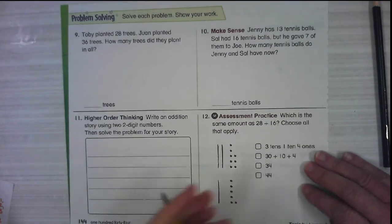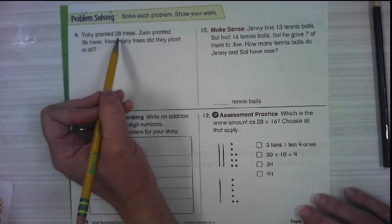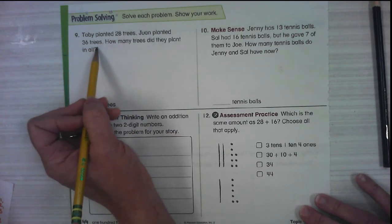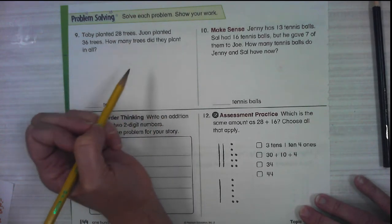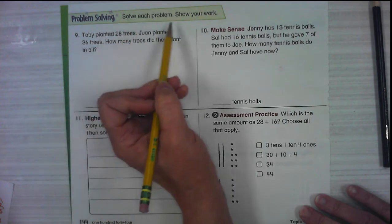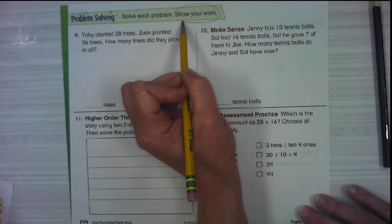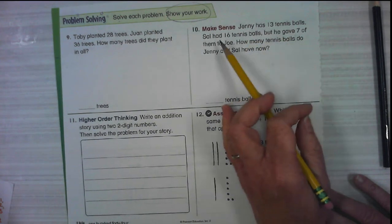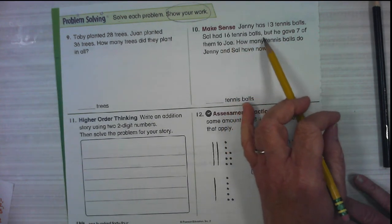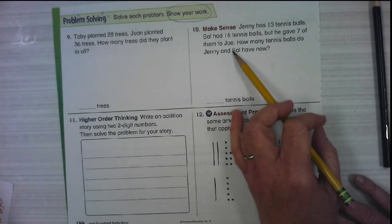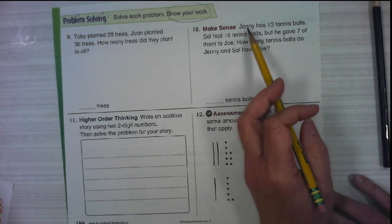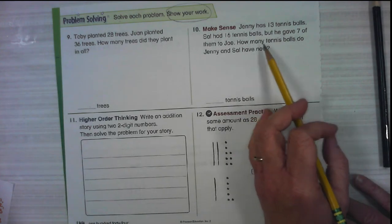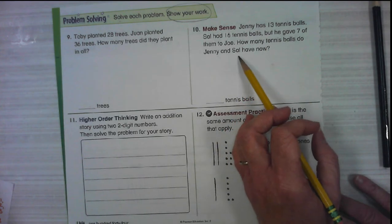Number nine says, Toby planted 28 trees. Juan planted 36 trees. How many trees did they plant in all? You're going to solve the problem and you're going to show your work. Number 10, Jenny has 13 tennis balls. Sal had 16 tennis balls, but he gave seven of them to Joe. So we have three people, Jenny, Sal, and Joe. How many tennis balls does Jenny and Sal have now?